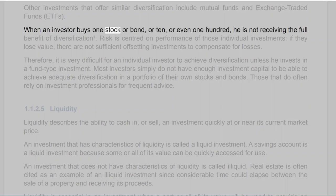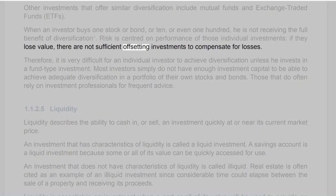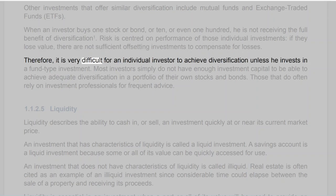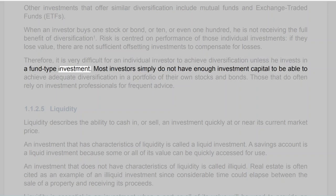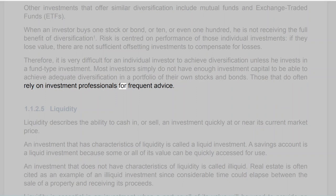When an investor buys one stock or bond — or 10, or even 100 — he is not receiving the full benefit of diversification. Risk is centered on the performance of those individual investments; if they lose value, there are not sufficient offsetting investments to compensate for losses. Therefore, it is very difficult for an individual investor to achieve diversification unless he invests in a fund-type investment. Most investors simply do not have enough investment capital to achieve adequate diversification in a portfolio of their own stocks and bonds.